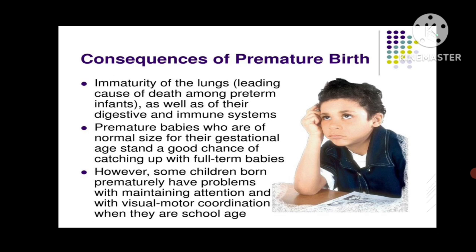What are the consequences of premature birth? When a baby does not complete its full gestational age and is delivered preterm, its internal organs — their structure, features, and physiology — are not properly matured and are not functioning well. The immaturity of the lungs is the leading cause of death among preterm infants, along with immaturity of the digestive and immune systems.